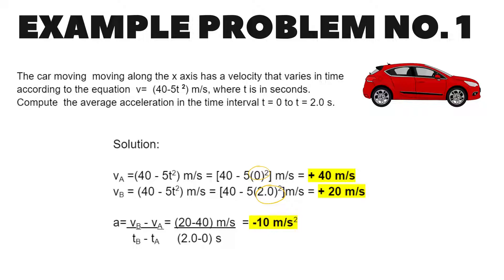V sub a is equal to 40 minus 5 multiplied by zero raised to 2. Therefore, V sub a is equal to positive 40 meter per second. V sub b is equal to 40 minus 5 multiplied by 2 squared, that is equal to 20 meter per second.